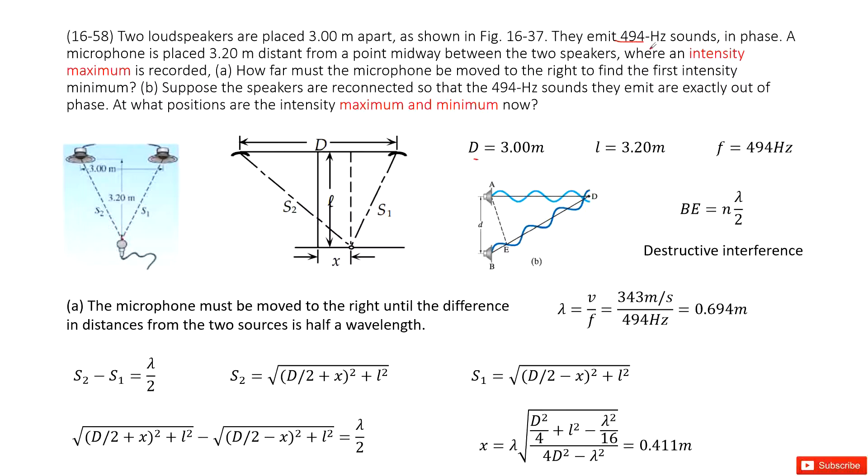And it also tells us these two speakers are in phase. First part, we need to determine when this intensity maximum is recorded, how far must the microphone be moved to the right to find the first intensity minimum. So there, first intensity minimum, what I mean? It's called a destructive interference.